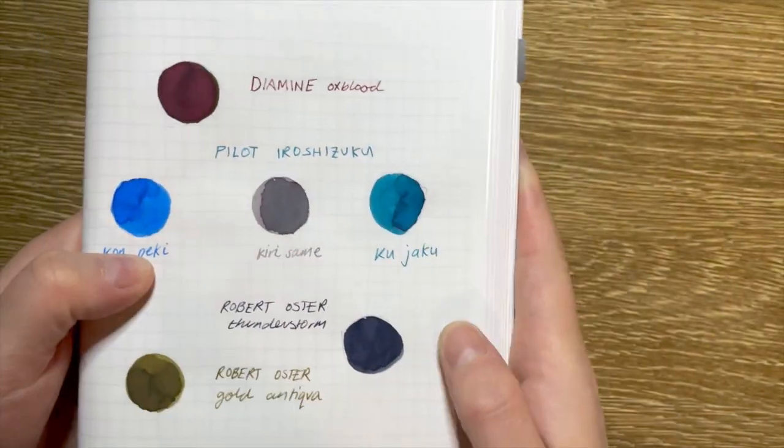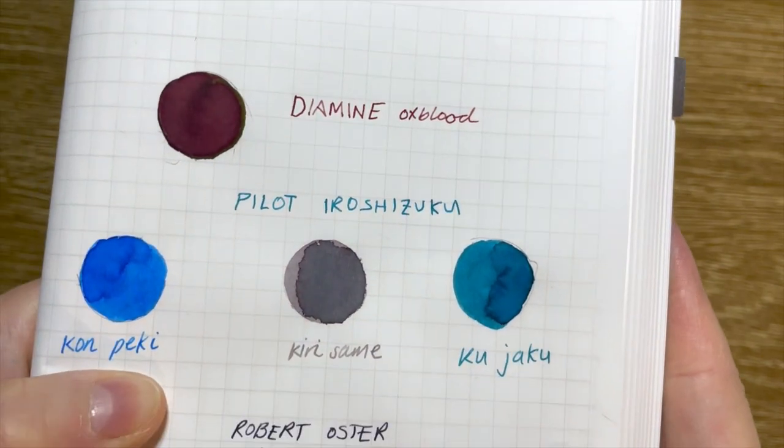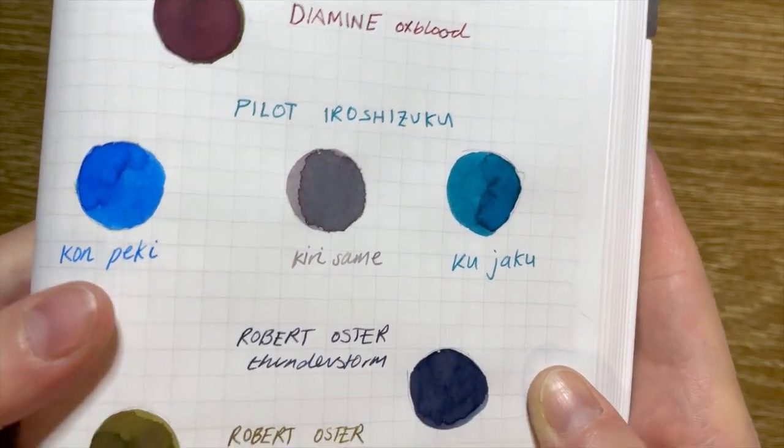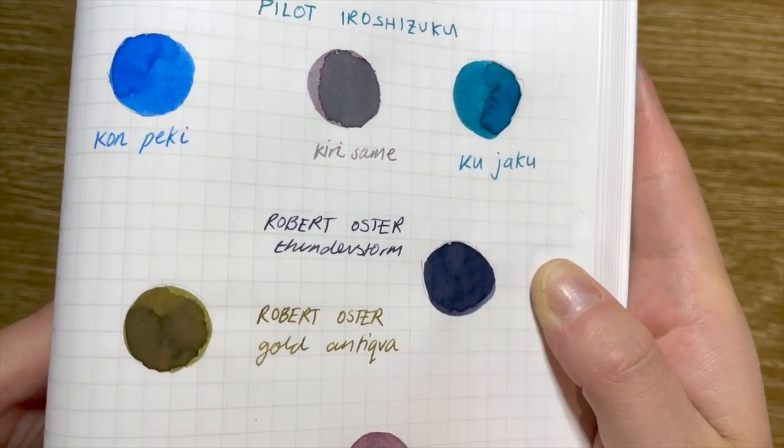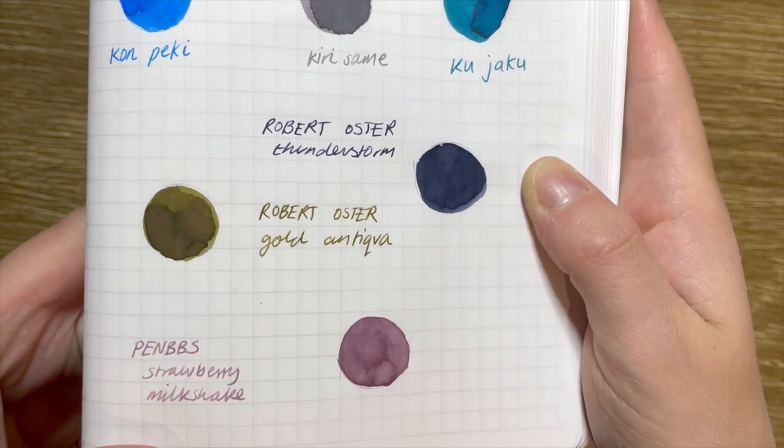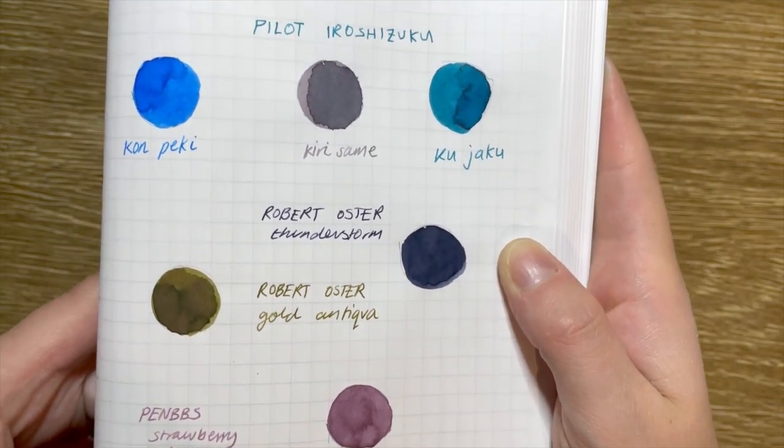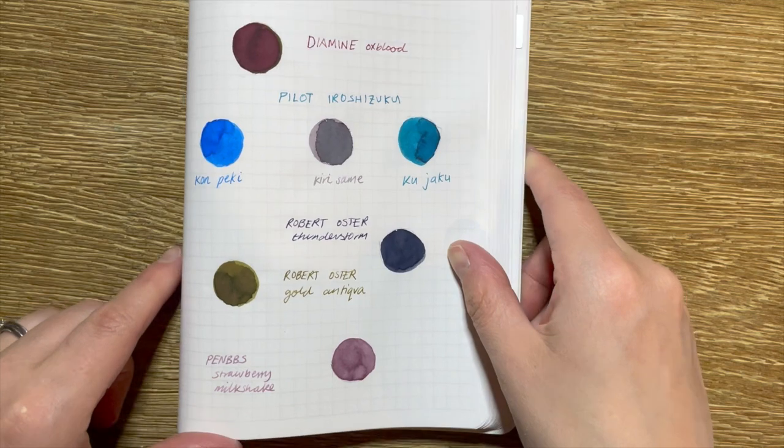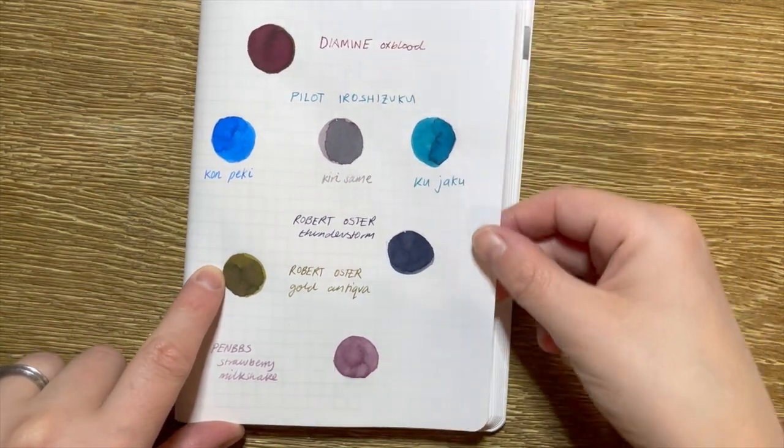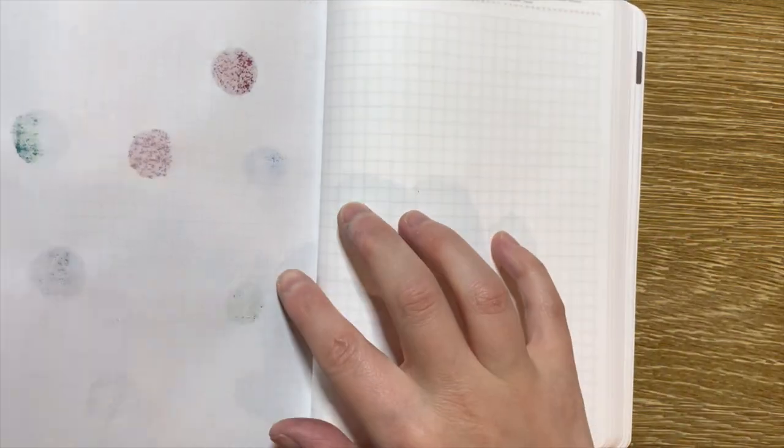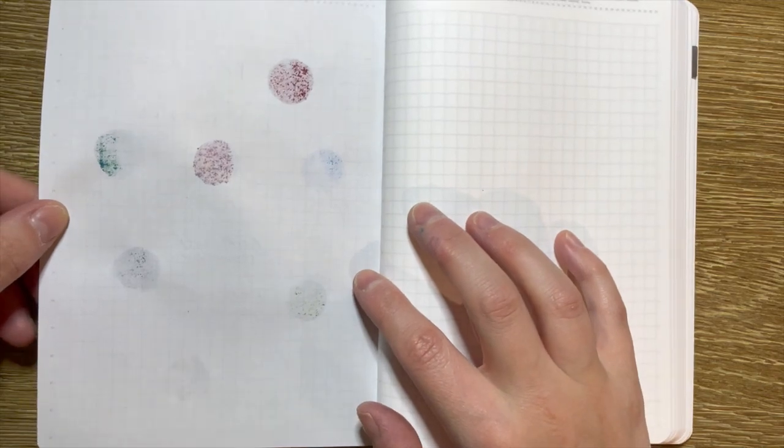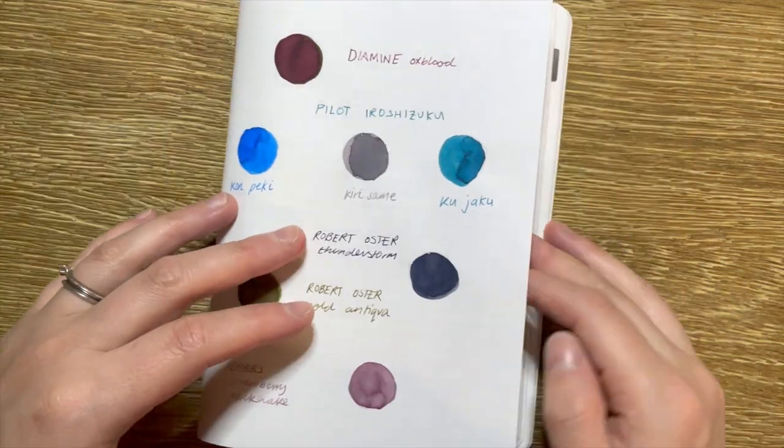So that is my top five ink recommendations for people starting out with fountain pens, just giving you a close-up of what they look like once they've dried - the Diamine Oxblood, Pilot Iroshizuku series, Robert Oster Thunderstorm or an Almost Black, a complex ink in Gold Antiqua, and an ink that makes you smile. Thank you so much for watching guys, and I will see you all again tomorrow. Bye.